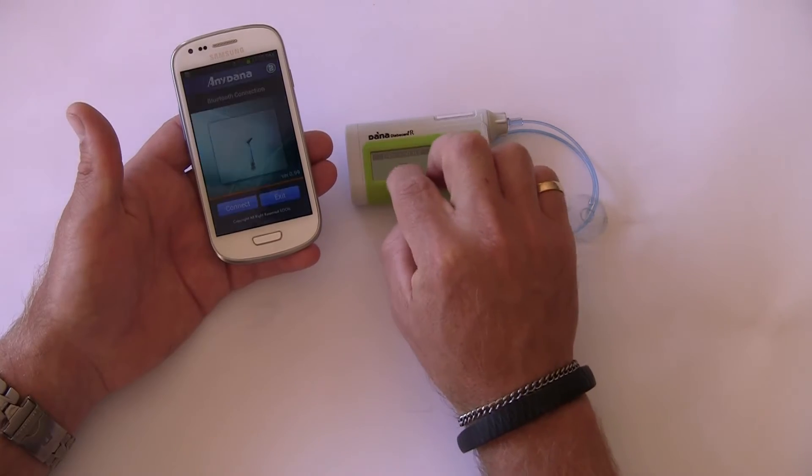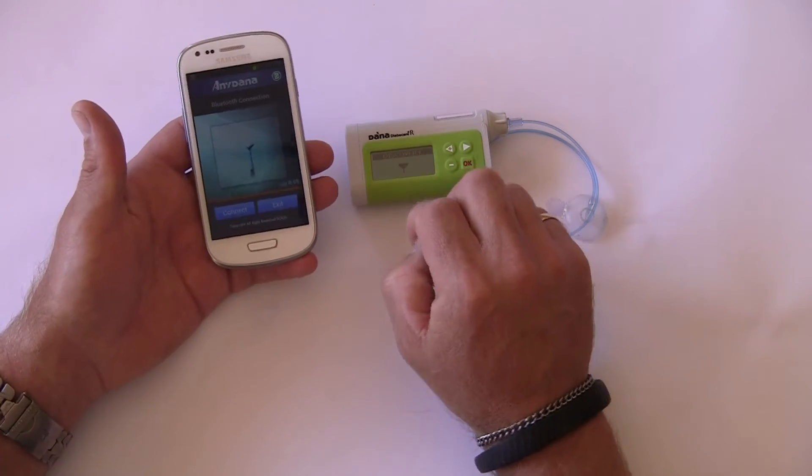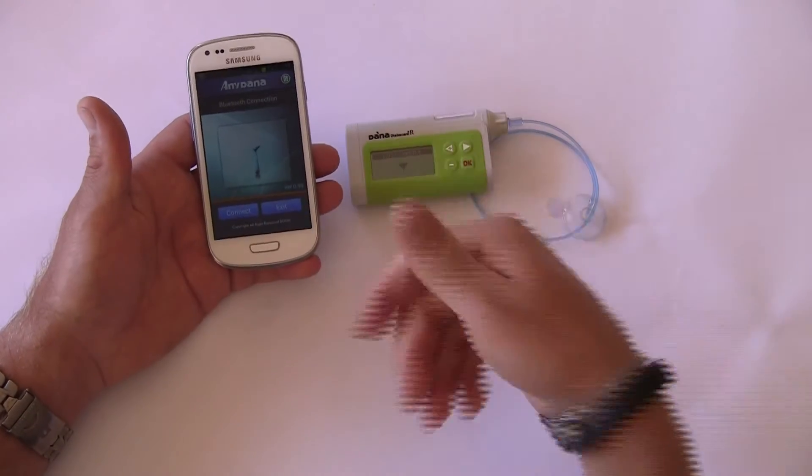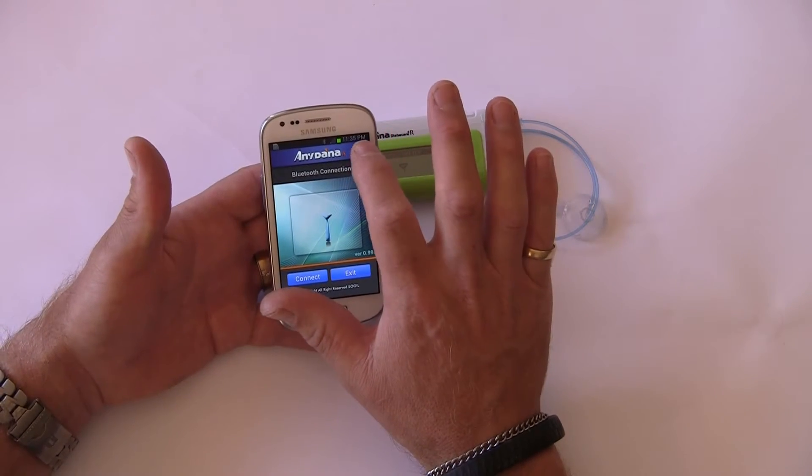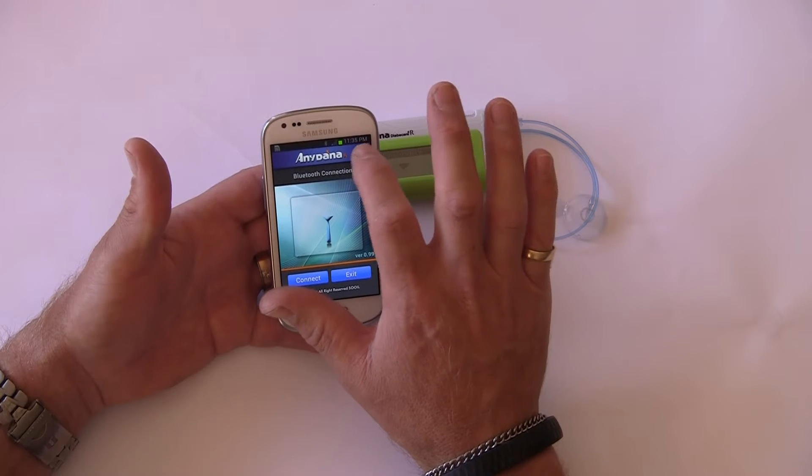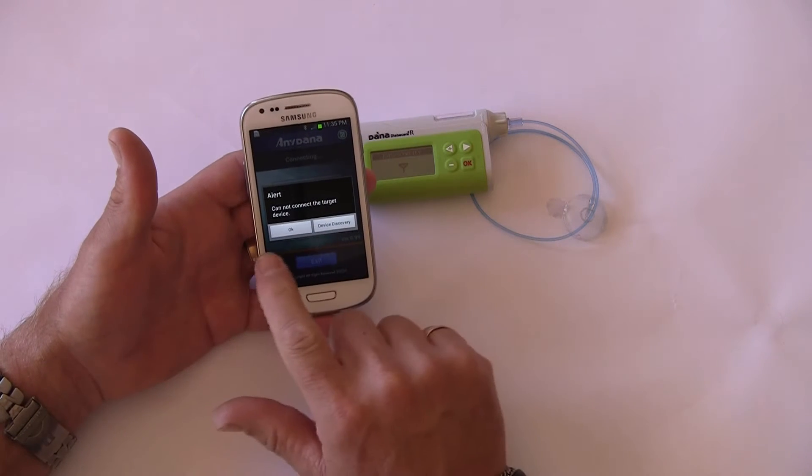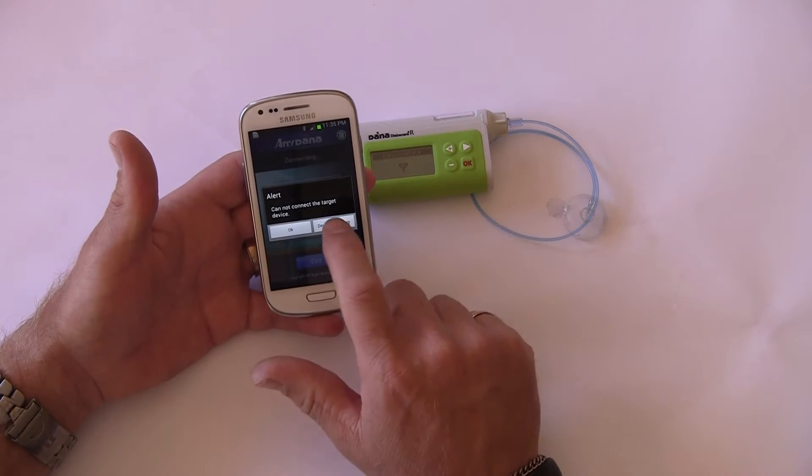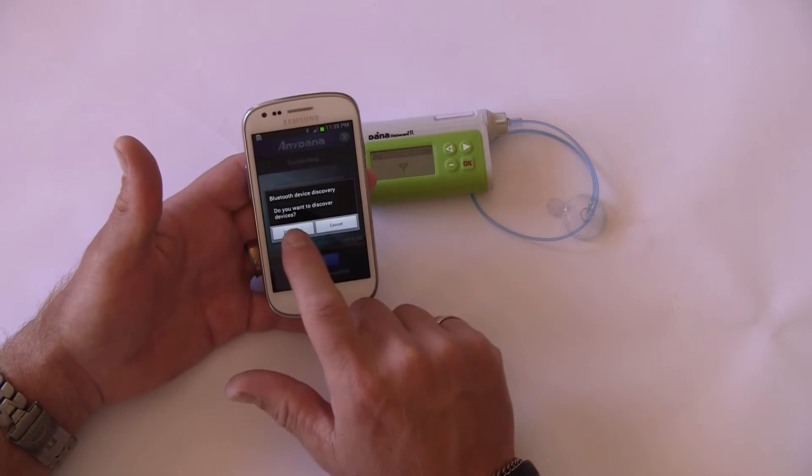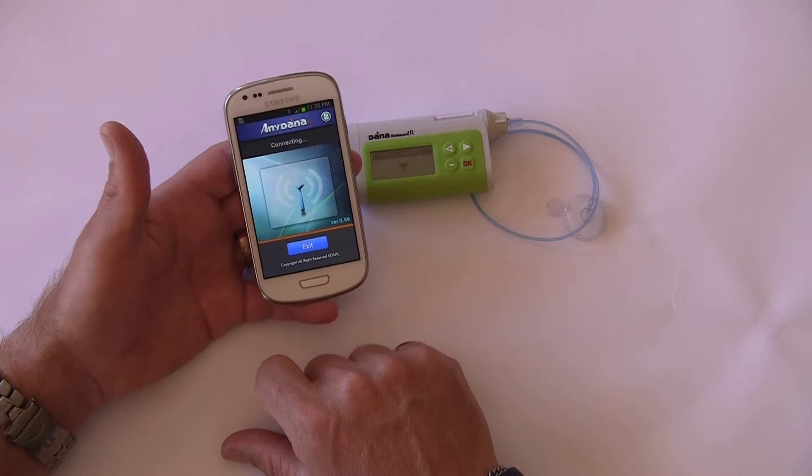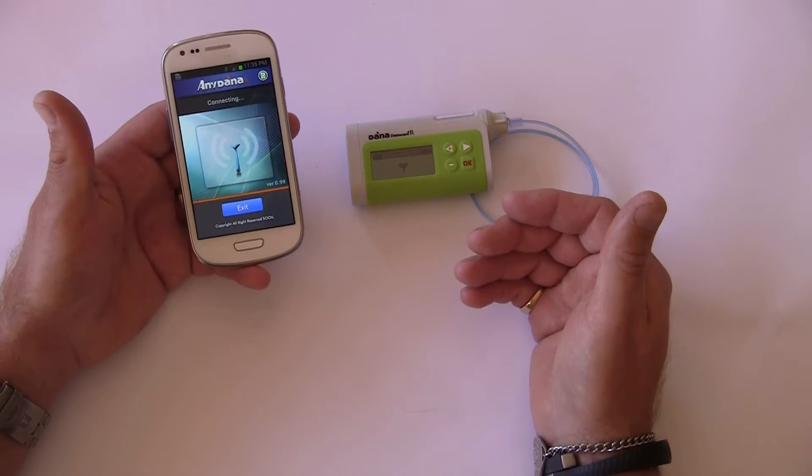On the front screen of the pump, the pump is now flashing with a little aerial symbol saying that it is discoverable and looking for Bluetooth devices to connect to. On the phone, top right-hand corner, there's a little phone display. We touch that button, go to device discovery, and say yes to discover. It's now searching and looking for other Bluetooth devices.